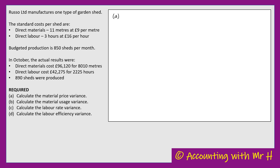Let's get underway with the first one — part A: calculate the material price variance. The formulas for these are just something you have to learn. The material price variance equals AQ × (SP − AP), where AQ is actual quantity, SP is standard price, and AP is actual price. When we work this out, remember we're talking about material, so when we say AQ — actual quantity — we mean the actual quantity of material, not the actual quantity of sheds or units made. All of the information we're going to put into this formula needs to be about the materials.